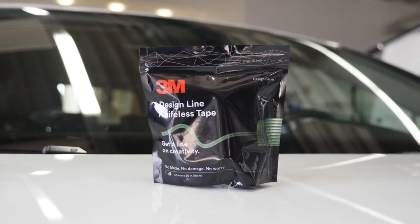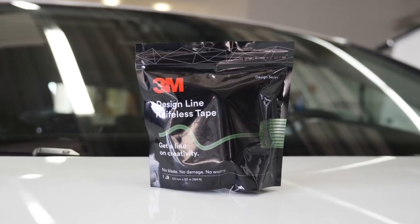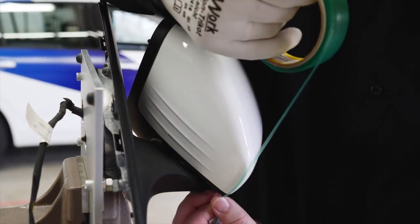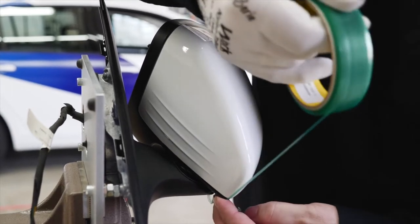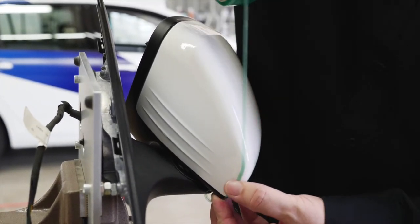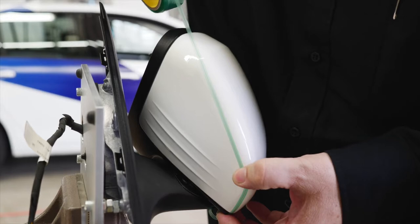After cleaning the mirror, use 3M Knifeless Tape Design Line to set the cut line for the first piece of film that is applied on the vertical undercut part of the mirror. Secure the knifeless tape to ensure good adhesion to the substrate.